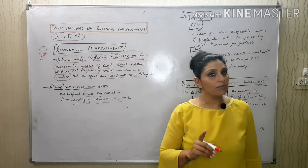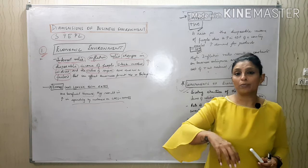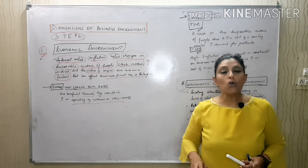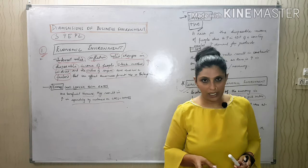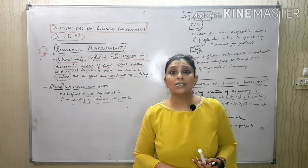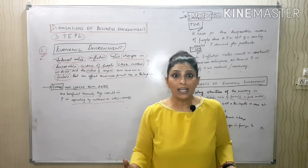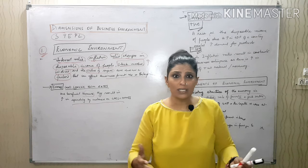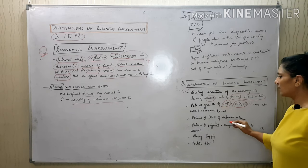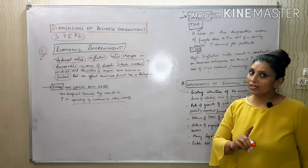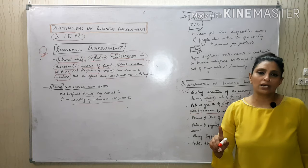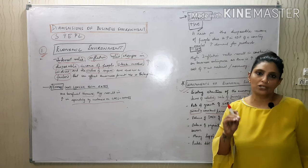Components of economic environment include the existing structure of the economy in terms of the relative role of the private and public sector — ours is a mixed economy. Examples: Yes Bank shares had a 15% drop; Oriental Bank of Commerce merged with Punjab National Bank; Jet Airways was declared insolvent in 2019. Rate of growth of GNP and per capita income — after this lockdown it will affect the entire national income. Considering all components in totality, there is going to be a recession in the economy.